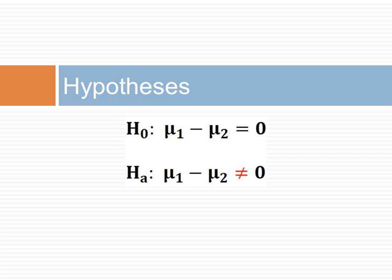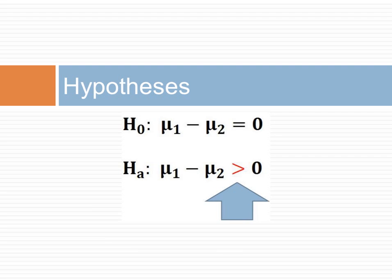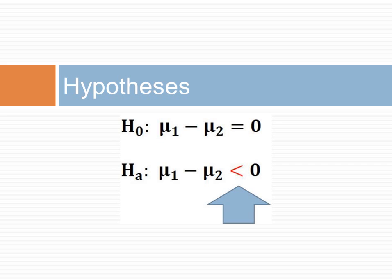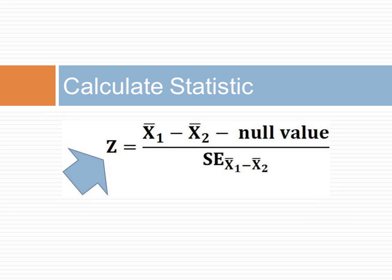In our framework for hypothesis testing, the next step is to state the hypothesis. The null hypothesis is that the difference of the two independent means is zero. The alternative hypothesis, if you are doing a two-sided test, is that the differences of the two independent means are not the same. If doing a one-sided test, the alternative hypothesis is that the difference of the two independent means is higher than zero or lower than zero.